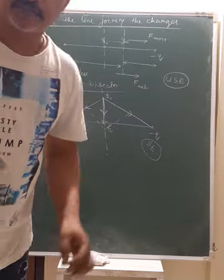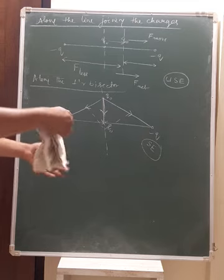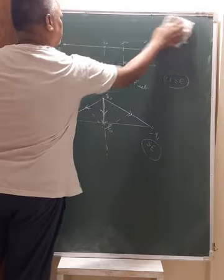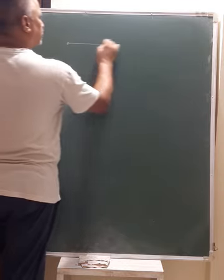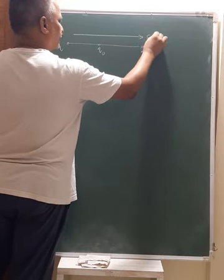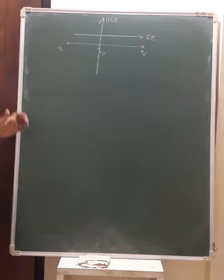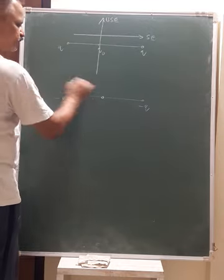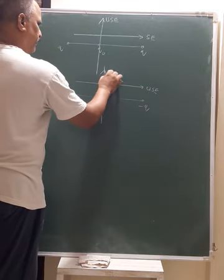To summarize the equilibrium cases: For +Q, +Q with q₀ at the midpoint — along the line joining the charges it is stable, along the perpendicular bisector it is unstable. For −Q, −Q with q₀ at the midpoint — along the line joining the charges it is unstable, along the perpendicular bisector it is stable. This is the comprehensive idea about stable and unstable equilibrium.